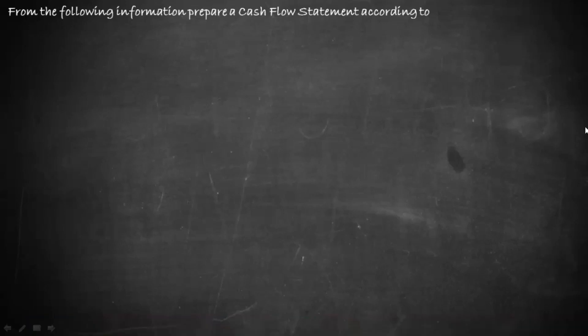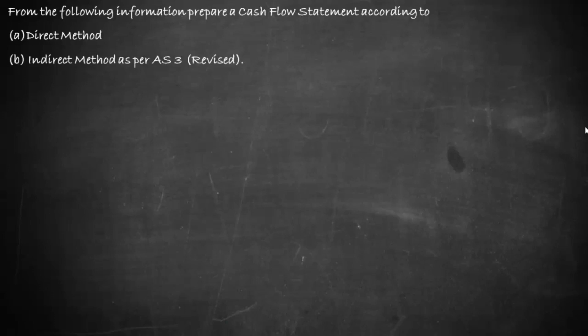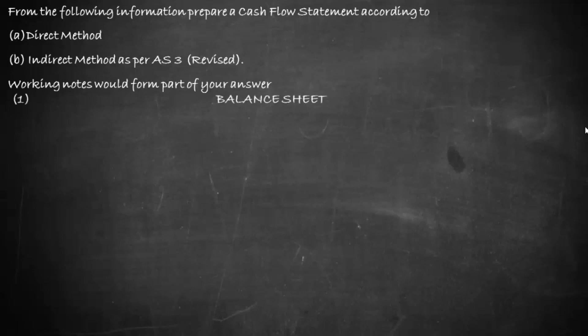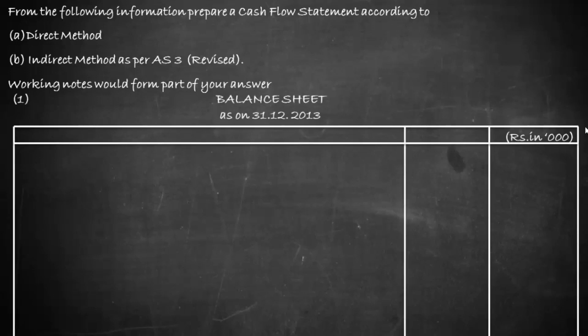From the following information we have to prepare a cash flow statement according to the direct method and indirect method as per Accounting Standard 3 Revised. Working notes should form part of your answer. We have a balance sheet as on 31/12/2013 and also information relating to 2012, which is more important for preparing the cash flow statement because only with two years' balance sheet can we find the movement in assets and liabilities.